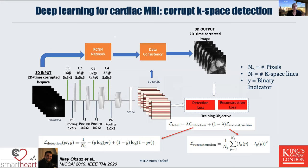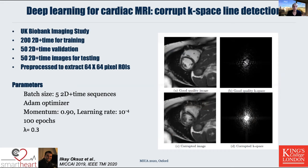This is how the network works. We use as input the 2D plus time corrupted k-space sequence and use a recurrent neural network approach, which makes use of the redundancy in the temporal dimension. We apply a data consistency term after the detection network and get a nice 2D plus time corrected output sequence. Our loss function consists of a detection loss and a reconstruction loss. We again used UK Biobank — 200 2D-plus-time images for training, 50 for validation, and 50 for testing. You see here a good quality image, a good quality k-space, and one of our corrupted images and the corrupted k-space as input data for training.